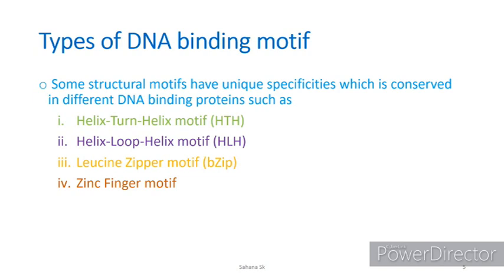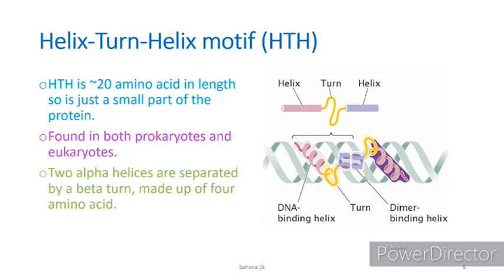The helix-turn-helix motif is 20 amino acids in length, so it's just a small part of a protein. It is found in both prokaryotes and eukaryotes. Its main characteristic is that it has two alpha helices which are separated by a beta turn.